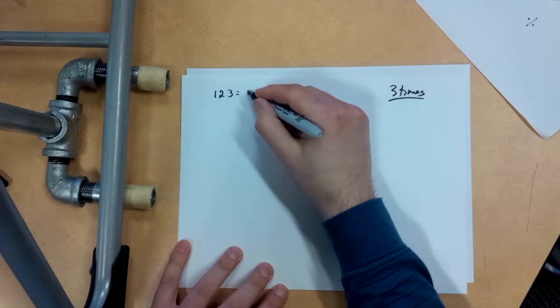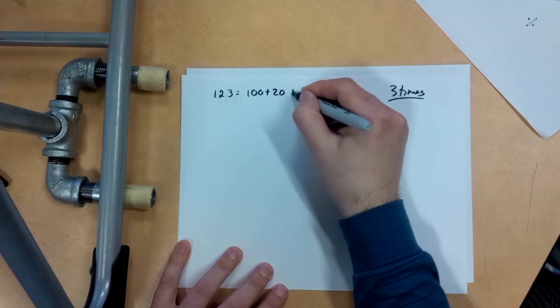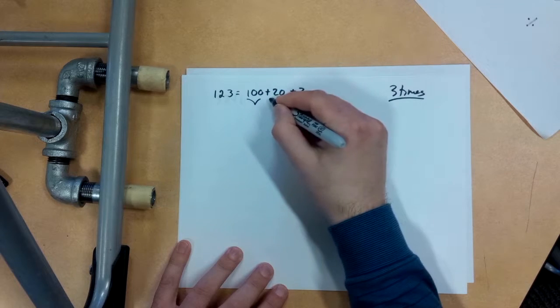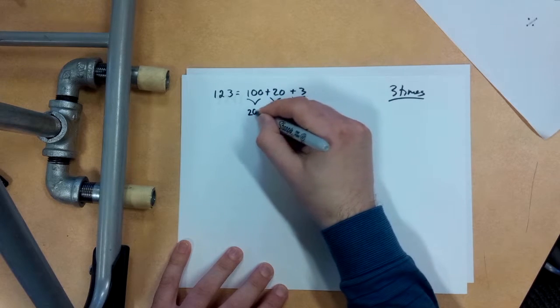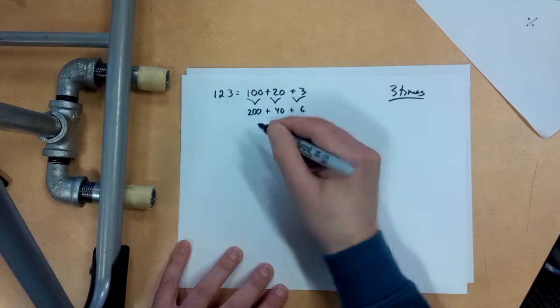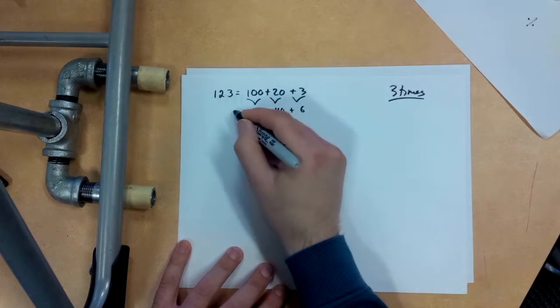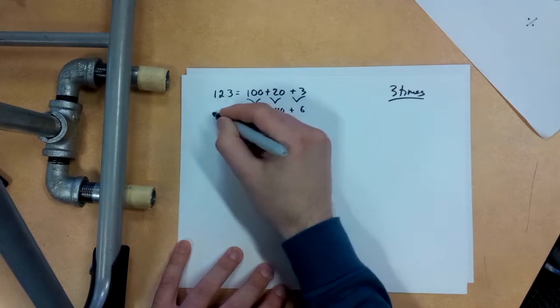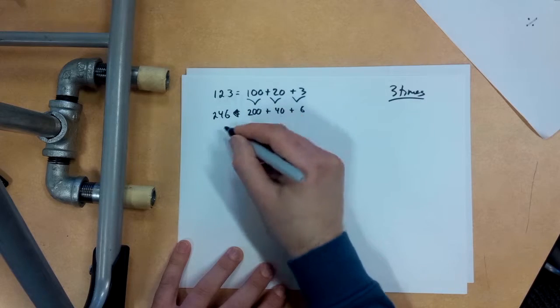So I'm going to show you the long way first of all, because I want us to get really good with that. If I double each of these things here, there's my 200 plus 40 plus 6. So I know that when I go back and say, what do I have, I've got 246. So there, I've doubled it once.